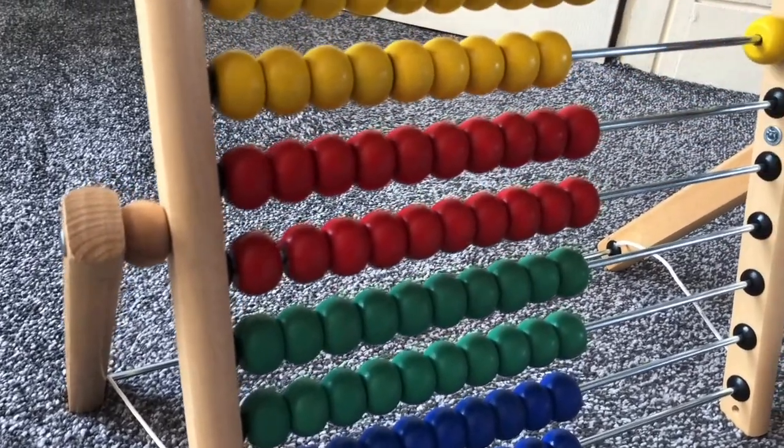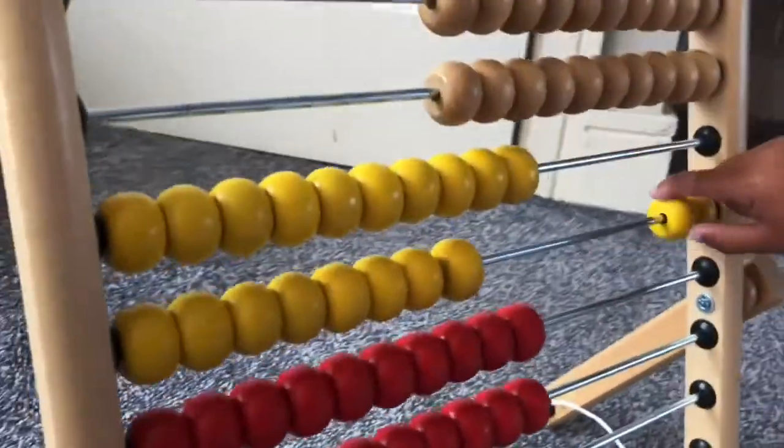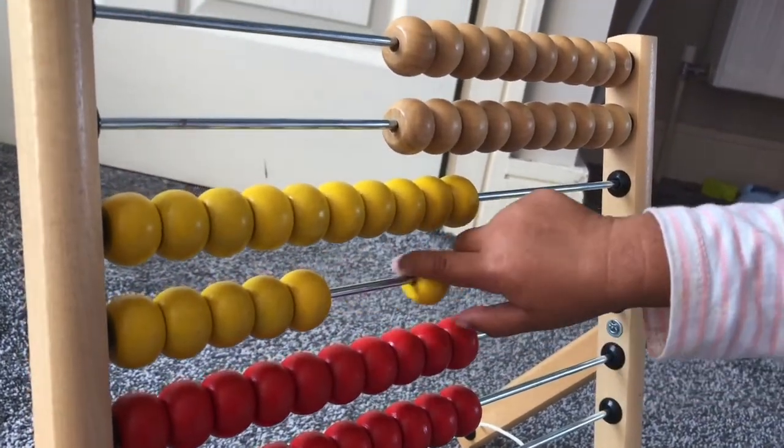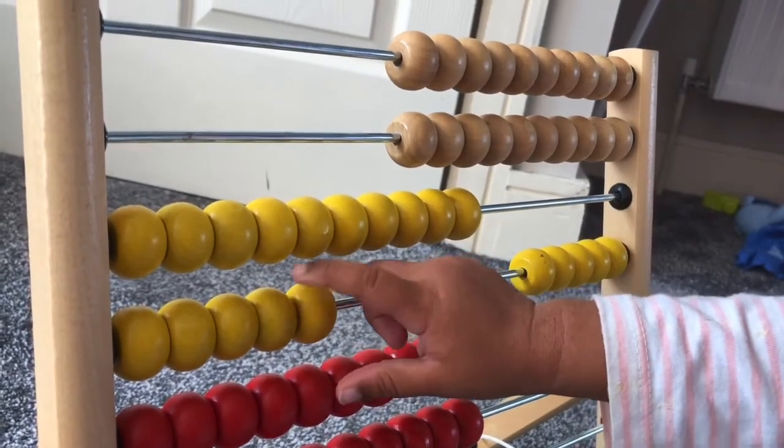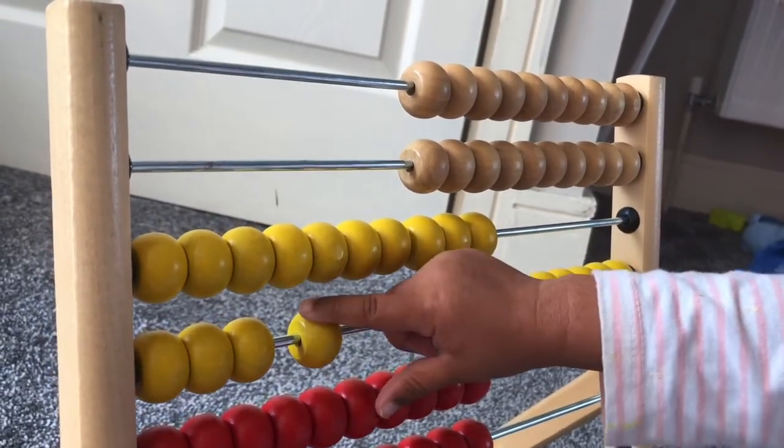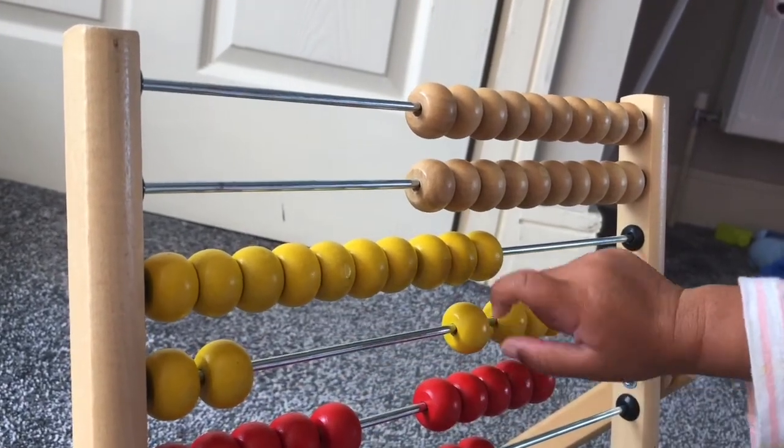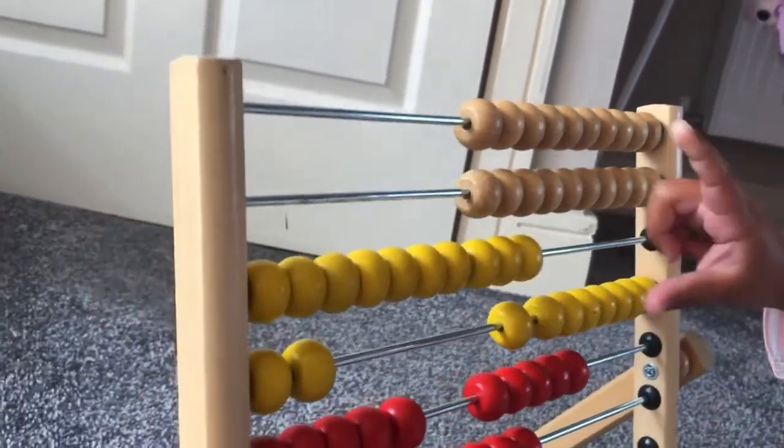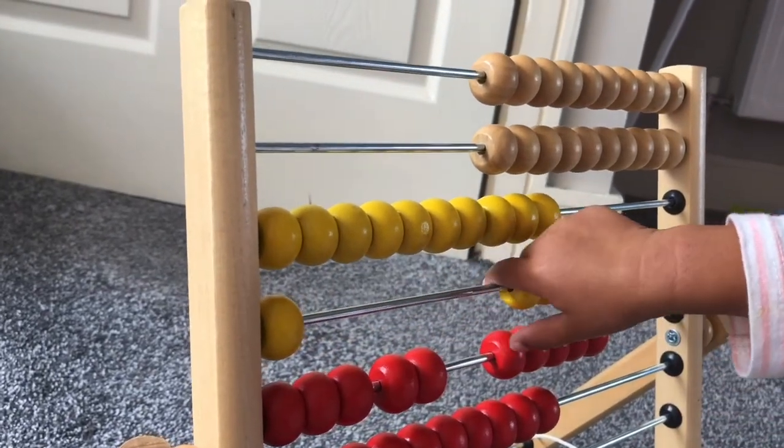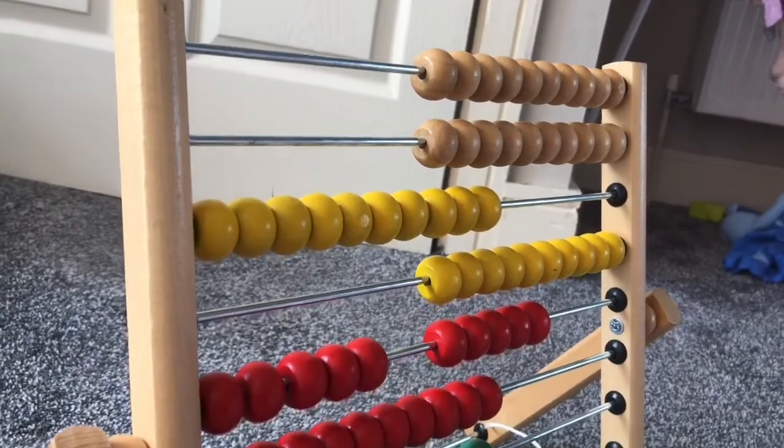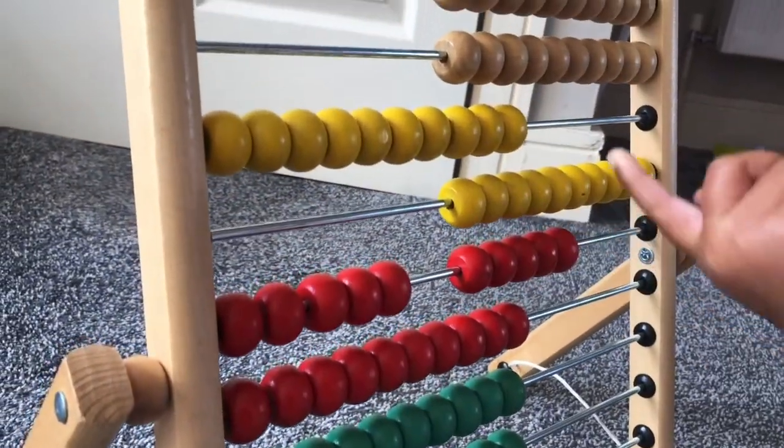Very yellow. One. Counting the yellow ones. Two, three, four, five, six, seven, eight. Good. Eight. What's after eight? Nine. And ten. Very good.